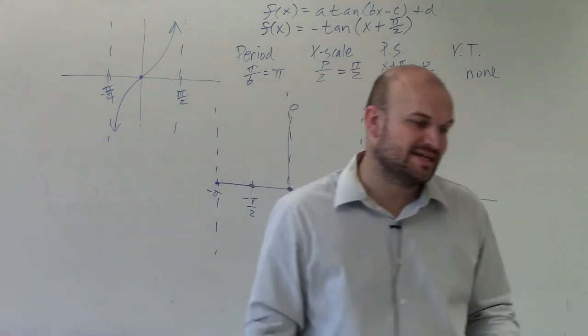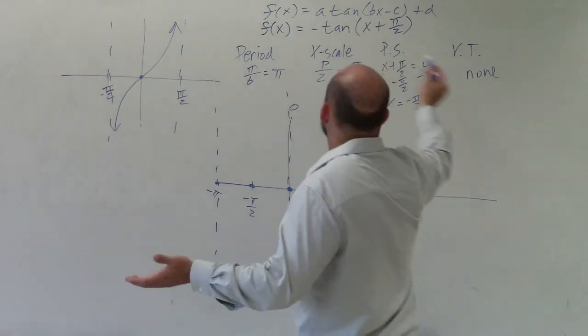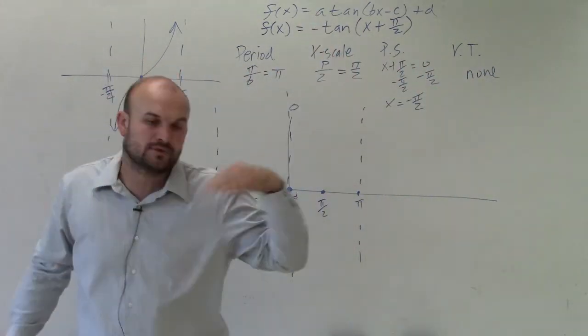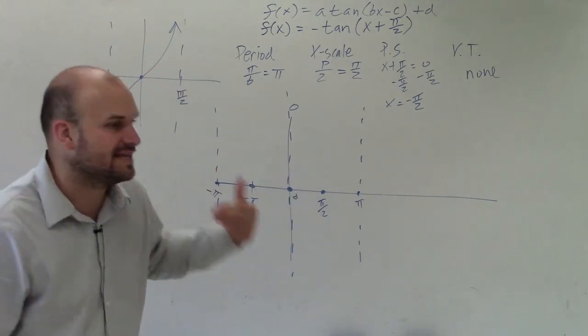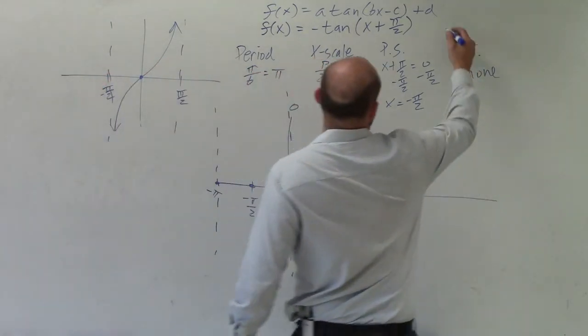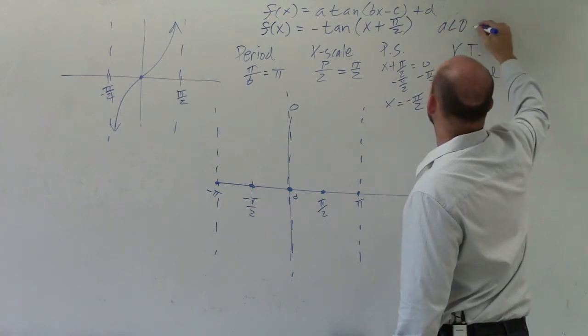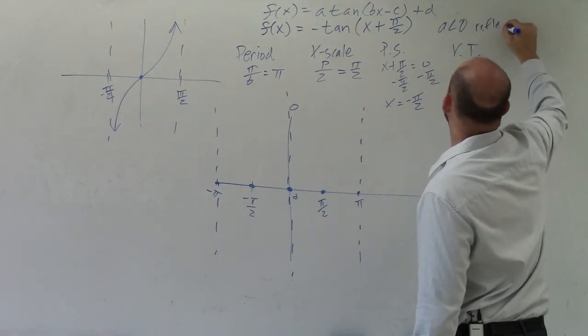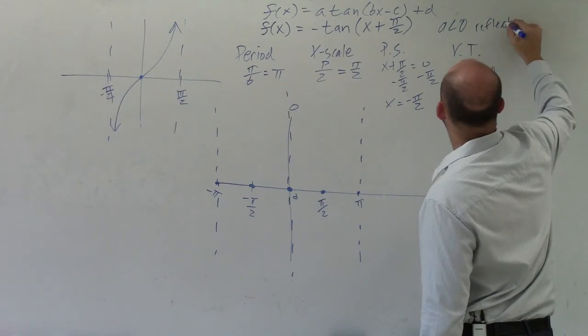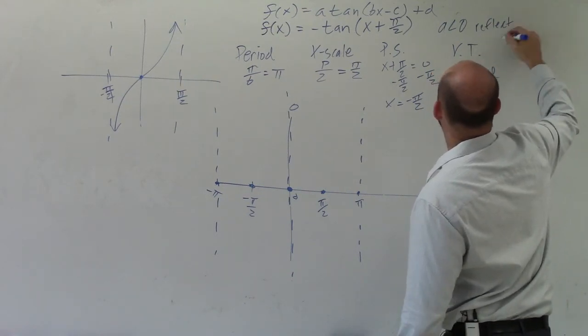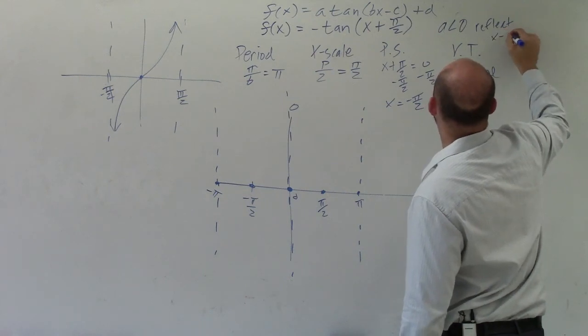Now the last transformation we see is this negative. And I don't have anything written for the negative, because the negative is telling us our a is negative. Whenever your a is less than 0, then we reflect the x-axis.